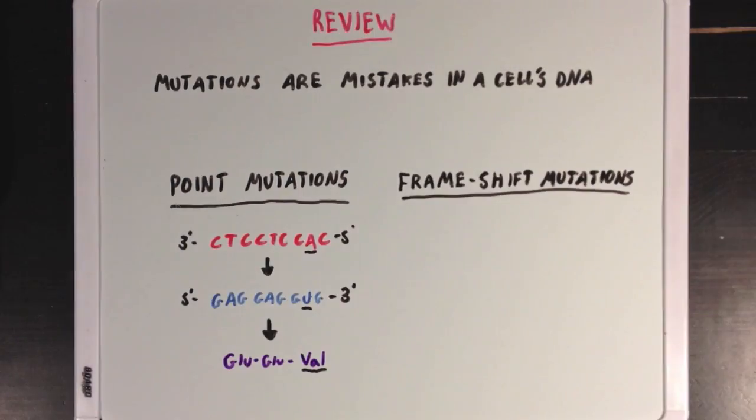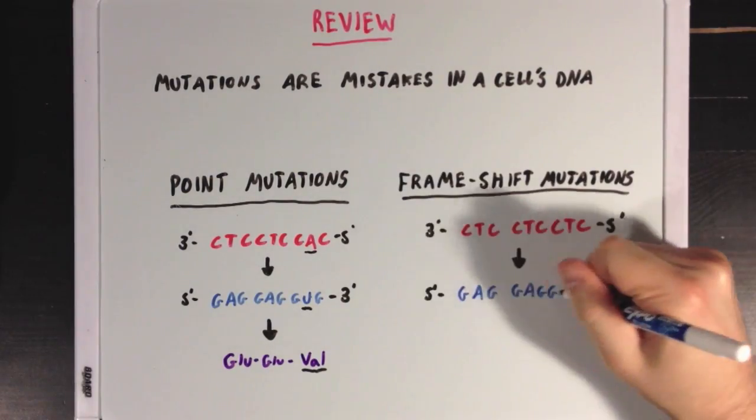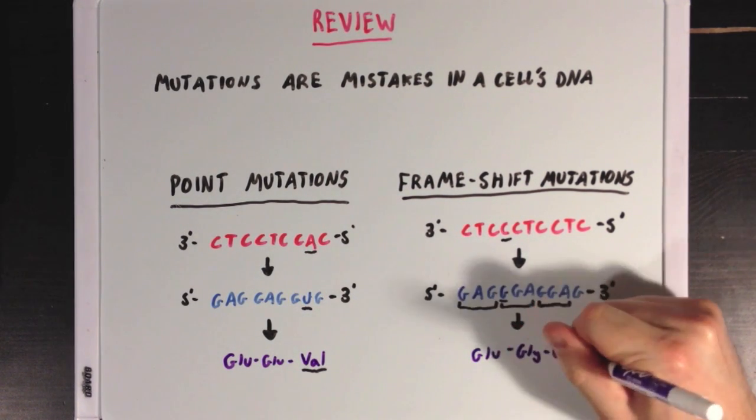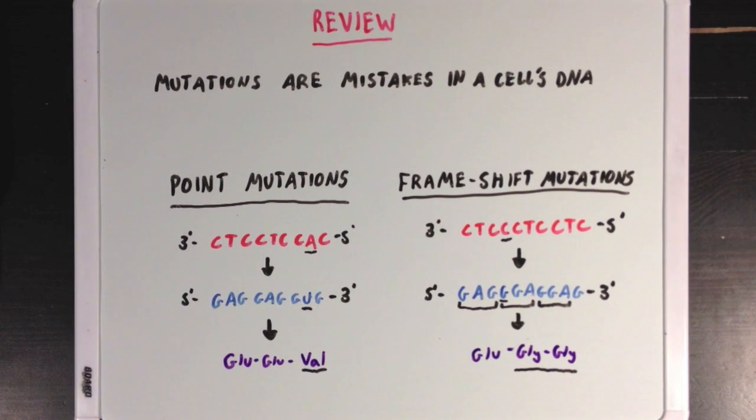Frameshift mutations are when the reading frame of the RNA is altered, and while the actual nucleotides in the RNA sequence haven't changed that much, the reading frame of the RNA strand has shifted, meaning that many different RNA codons will change as a result. And we're going to take a look into what causes these point and frameshift mutations.